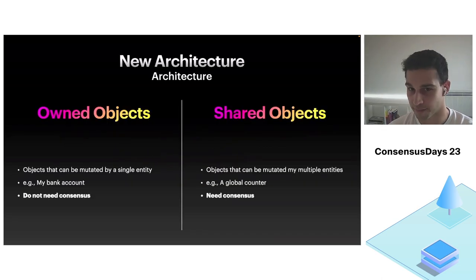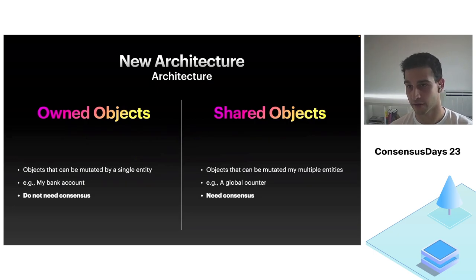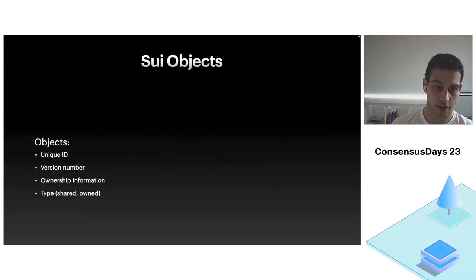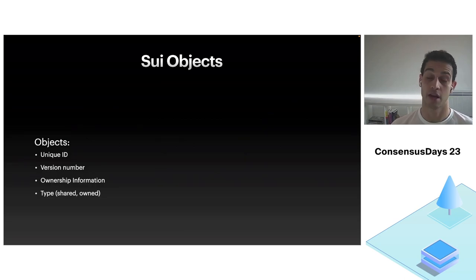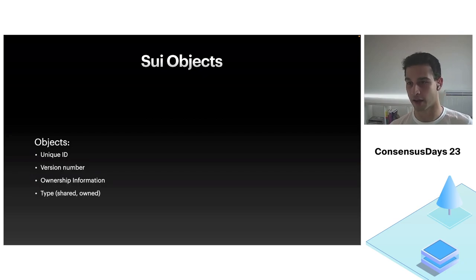We split the state into two types of objects. Owned objects can be mutated by a single owner or entity, and those do not go through consensus. All others are shared objects — they can be mutated by multiple owners. Objects have a unique ID (no two objects in the history of the system share the same ID), a version number that increments every time the object is mutated, ownership information, and a type — either owned or shared.